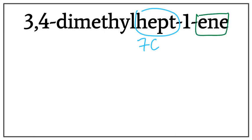Ene tells us that this is an alkene, meaning that there is a double bond present between the carbons. Okay, let's draw the 7-carbon chain.